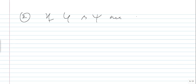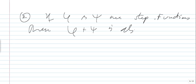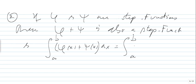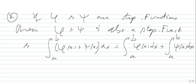Also, we can show that if φ and ψ are step functions, then φ + ψ is also a step function, and the integral from a to b of (φ(x) + ψ(x)) dx equals the integral from a to b of φ(x) dx plus the integral from a to b of ψ(x) dx. This is the linearity of the integral, as well as multiplication by a constant. To prove this, you take the union of the two partitions, get a common partition for both φ and ψ, and the integral is independent of the partition.